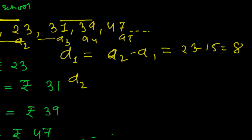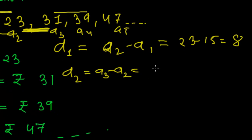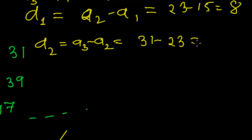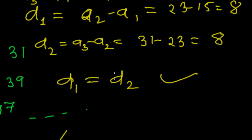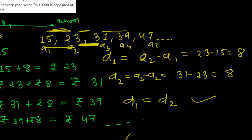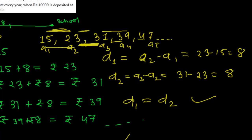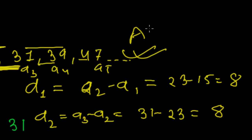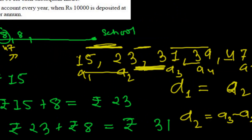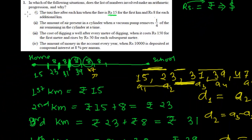Let me find the common difference between the third and second term — a3 minus a2 — that is 31 minus 23, which is again 8. Since the common difference is constant, D1 equals D2, and if you check further terms the difference will be the same throughout. Since the common difference is constant, this situation is forming an arithmetic progression. This is an AP.